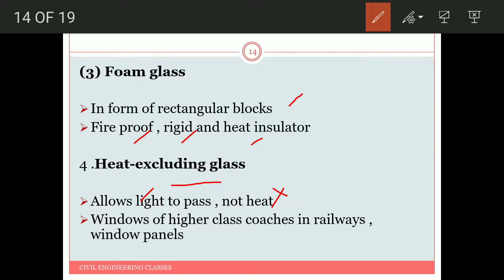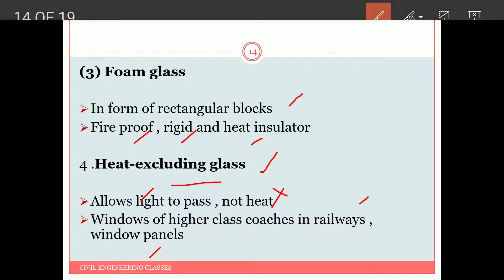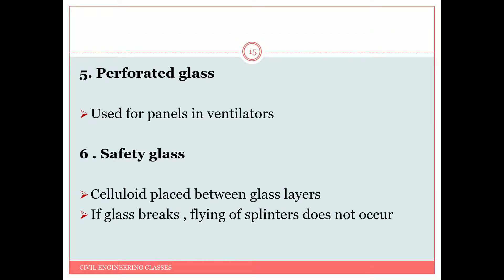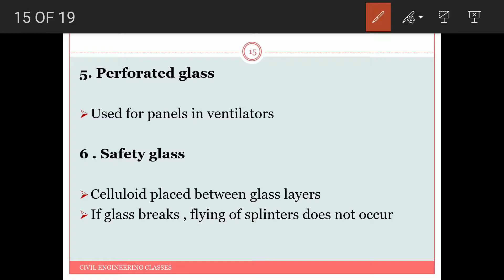Heat excluding glass is mainly used in windows of higher-class railway coaches and in window panels. Perforated glass is used in panels and ventilators. Safety glass has celluloid placed between glass layers so that if the glass breaks, the flying of splinters can be avoided.